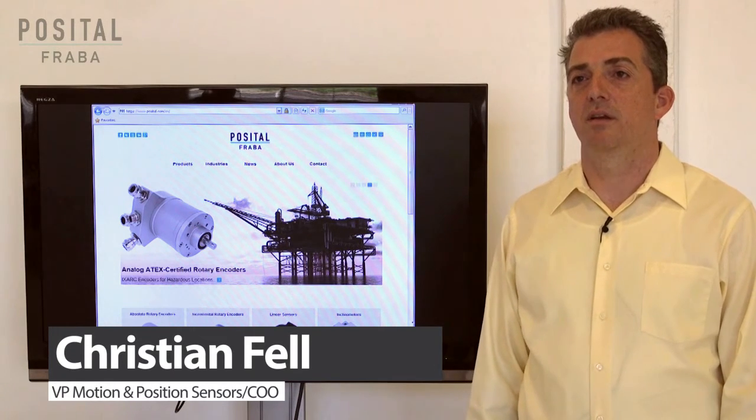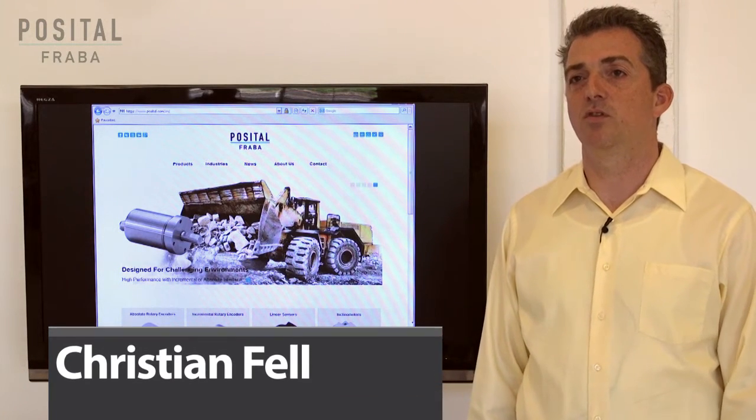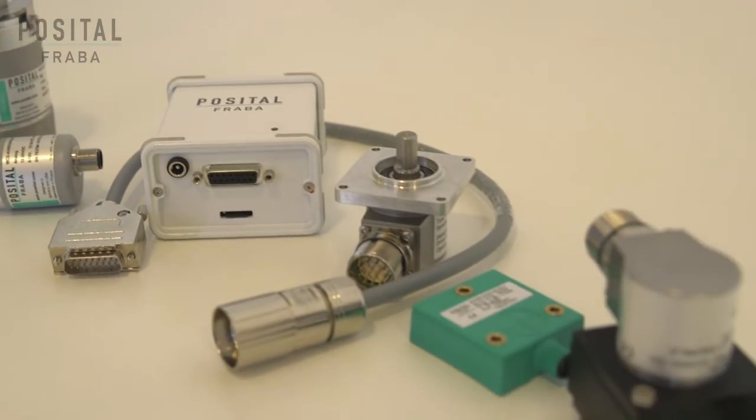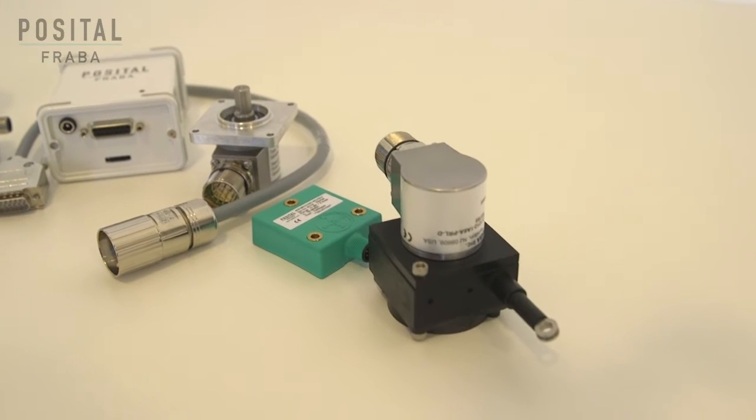Posital Fraba designs, manufactures and sells all kinds of motion and position sensors including absolute rotary encoders, incremental encoders, linear systems and inclinometers which are used to measure tilt.